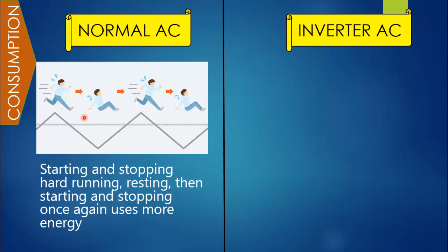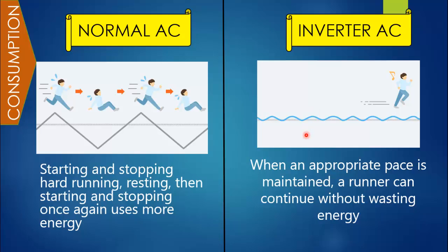The operation of a normal AC mimics this picture where a person is trying to climb down or climb up a cliff, then rest, then start again. This starting, stopping, and resting sequence will exhaust the machine, require more energy, be very hectic, and will also be damaging to its lifespan. Whereas an inverter AC will continue to operate at an appropriate pace, wasting less energy with a much smoother operation.